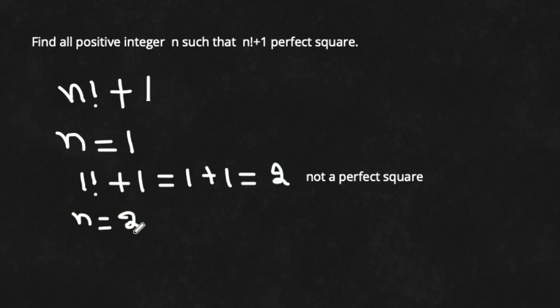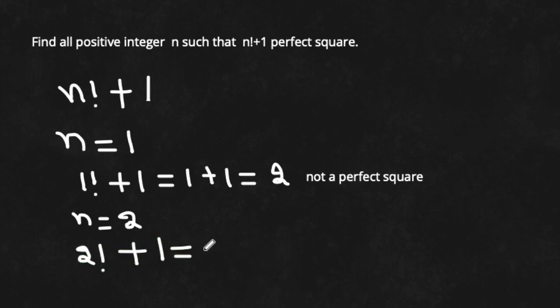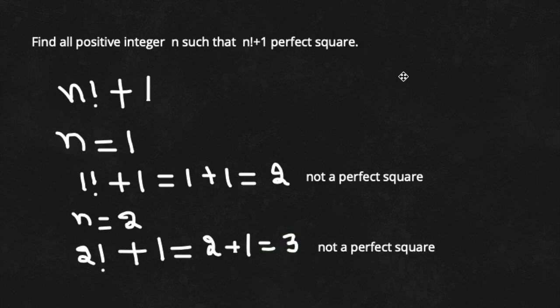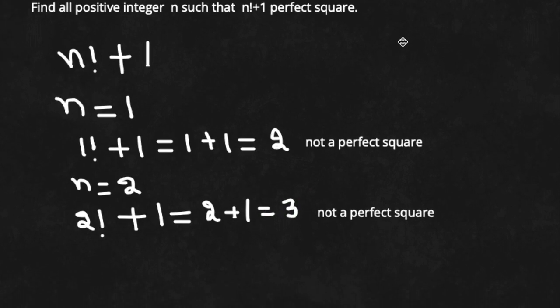Next, I choose n is equal to 2. 2 factorial plus 1: 2 factorial is basically 2, so 2 plus 1 is 3. 3 is also not a perfect square.